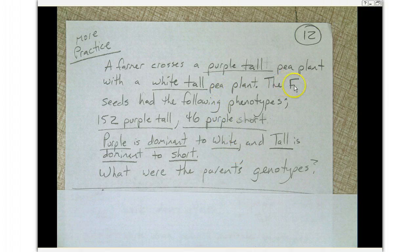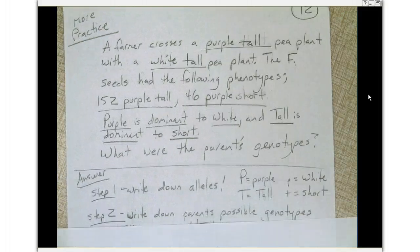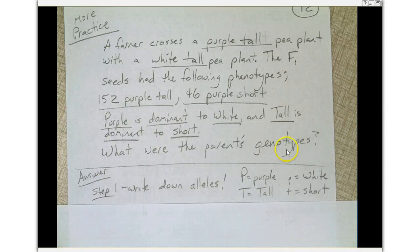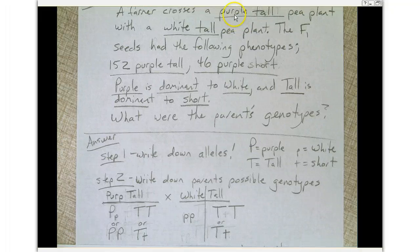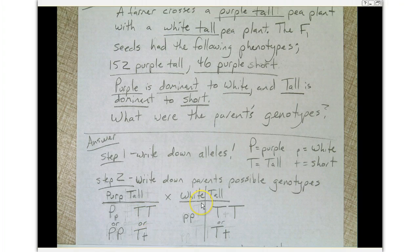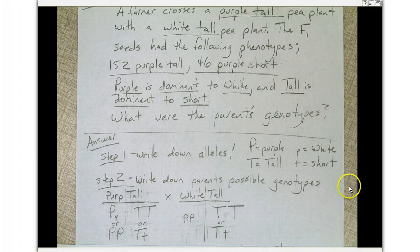To answer this problem, first write down your alleles — always write down your alleles. The second step is to write down the parents' possible genotypes. For the purple tall parent, there are two ways to make purple: big P little p, or big P big P. For the tall trait, it could be big T big T or big T little t. For the second parent — white tall — there's only one way to make white, which is little p little p. But tall again has two possible genotypes: big T big T or big T little t. Analyze the traits separately.